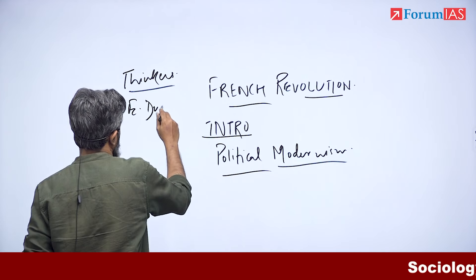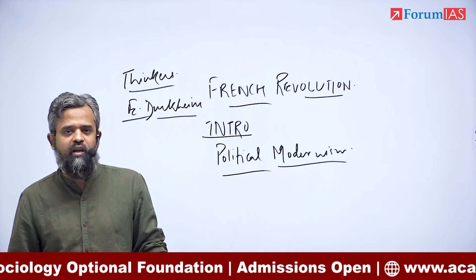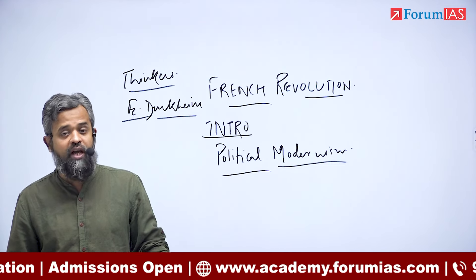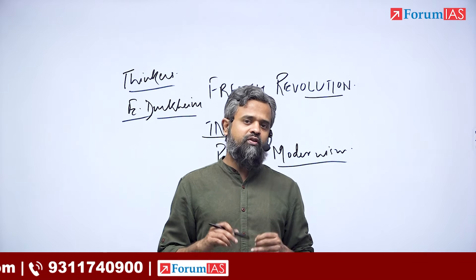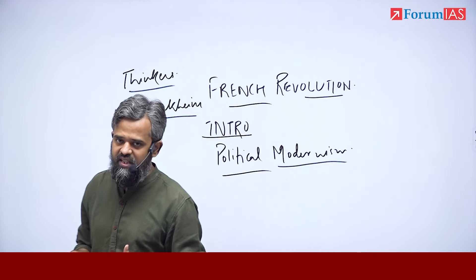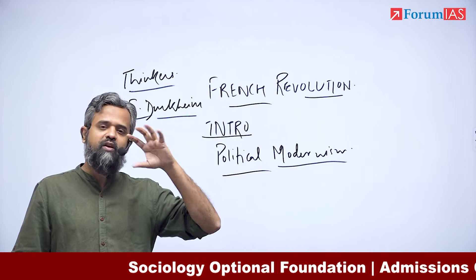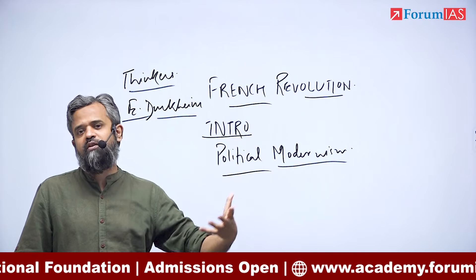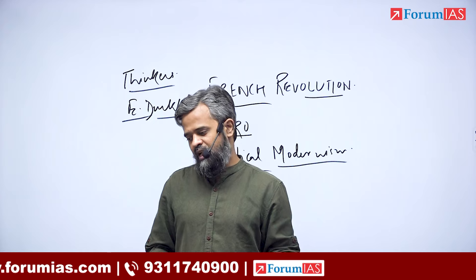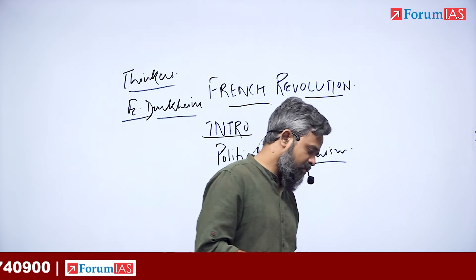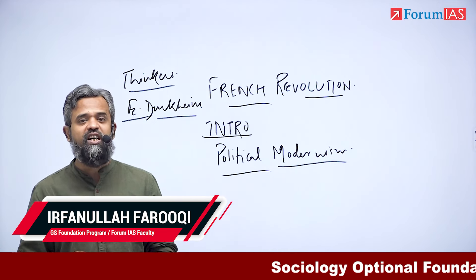In the crux, we can always bring in thinkers. Remember, there are thinkers who have glorified the French Revolution and thinkers who have questioned it. For example, Durkheim has glorified the French Revolution. In his work Elementary Forms of Religious Life, Durkheim writes about the French Revolution and glorifies it, saying it is an instance that tells us about how society sacralizes itself — a glorious, dramatic historical instance of society sacralizing itself and acquiring a powerful collective aura.